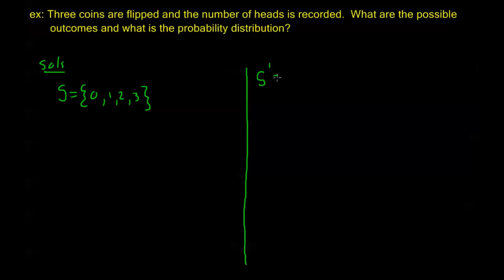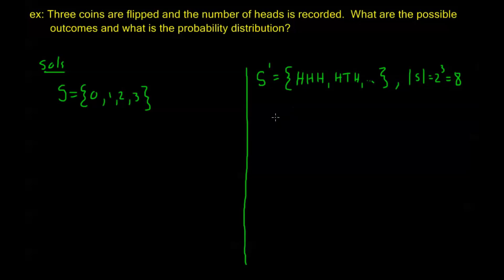I'll call my uniform environment sample space S′. In S′ I consider all different combinations of heads and tails across the three flips — like HHH, HHT, HTH, and so on. Flipping a coin is an experiment of order two, and I'm doing it three times, so by the multiplication principle the order of S′ is 2³ = 8. Now I break this into events by number of heads. E₀ is the event of zero heads, which only happens with all tails — one outcome — so P(E₀) = 1/8.